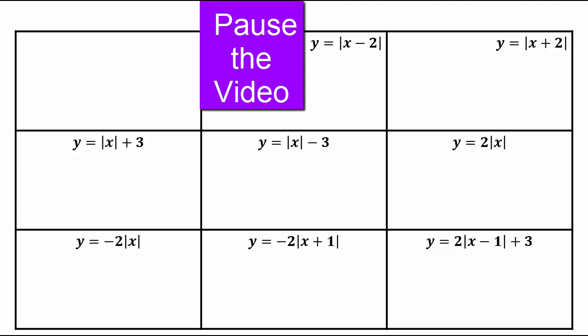To identify the base function, look for the common underlying theme across all the functions. Look at what operations the constants are doing — adding, subtracting, multiplying, dividing. If you take away all the constants that are being added, subtracted, or multiplied on the input or output, what's left is the base function.